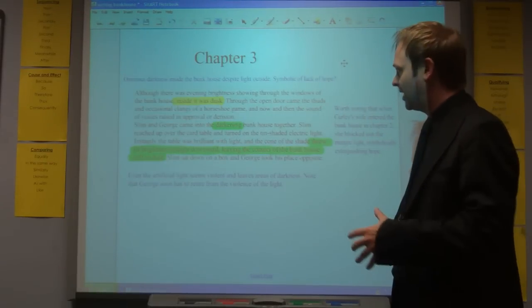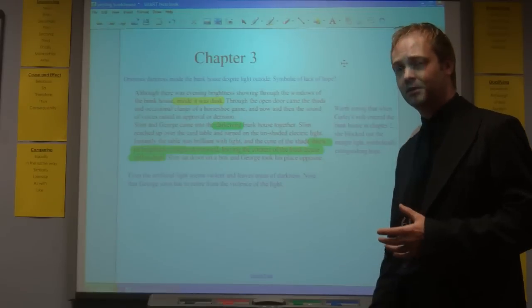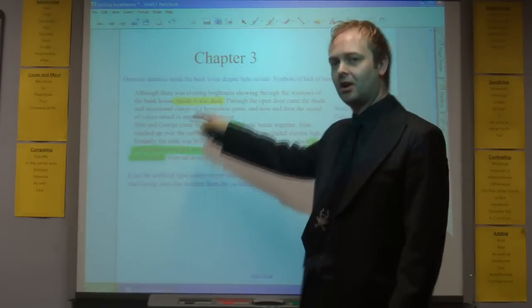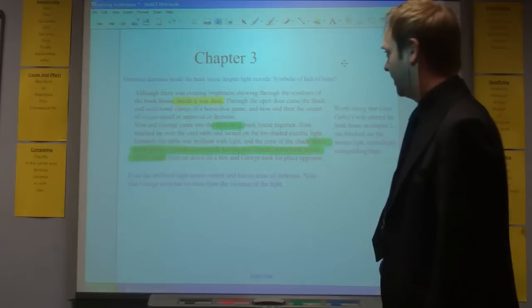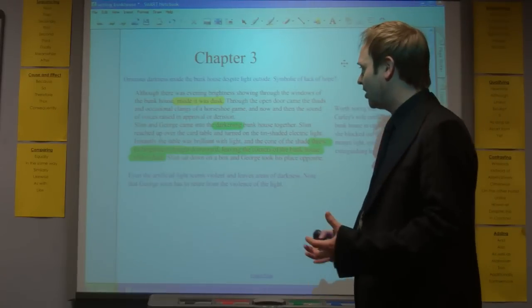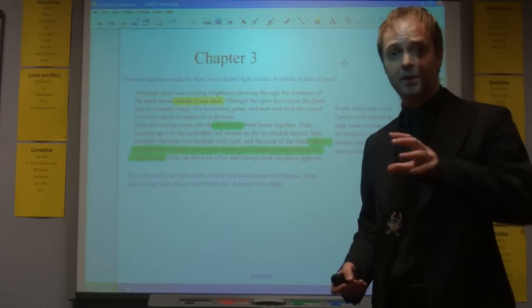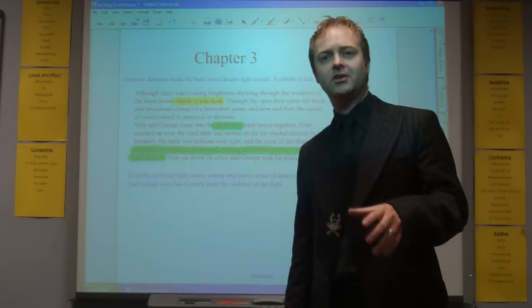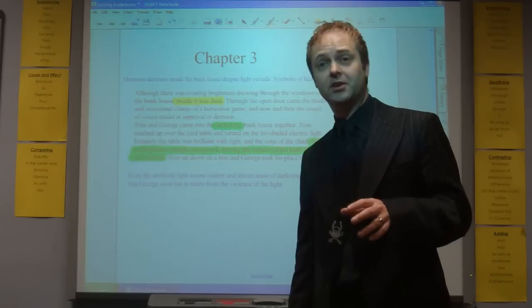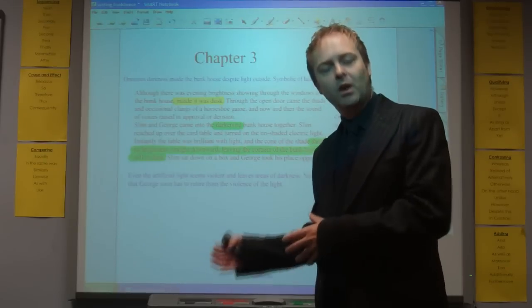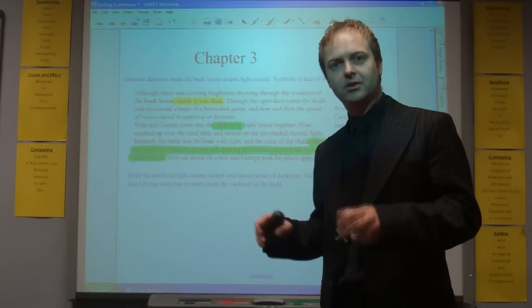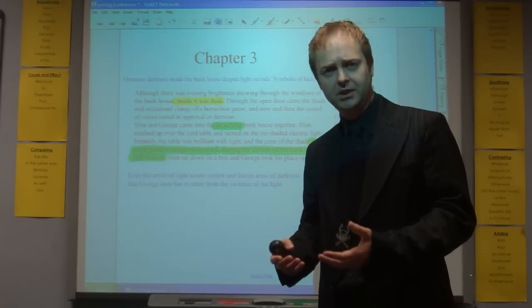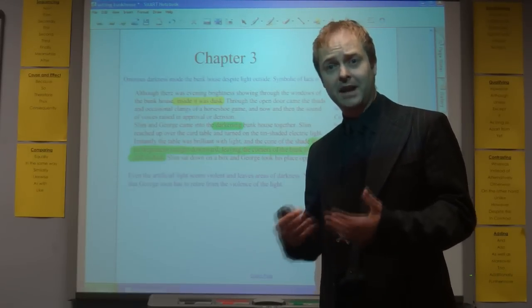Finally, just nipping into chapter three, once again we get a description of the bunkhouse. Although there was an evening brightness showing through the windows of the bunkhouse, inside it was dusk. There's this ominous darkness inside the bunkhouse, despite the fact that it's still light outside. Could that be symbolic of a lack of hope? It's worth noticing that in chapter two, when Curly's wife appears, she blocks out the sunlight. She seems to take away hope as well. She's perceived as some kind of danger that the ranchmen have to overcome.